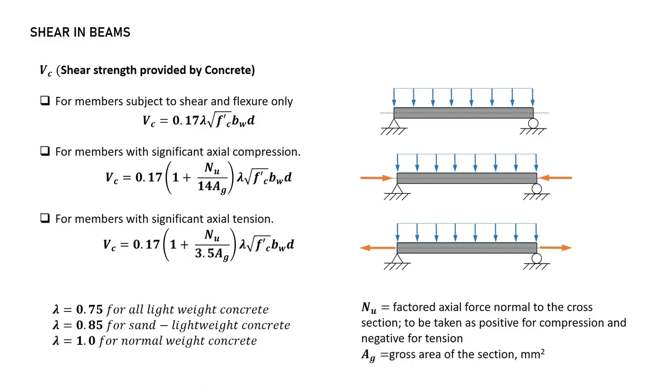NU is the factored axial force normal to the cross section to be taken as positive for compression and negative for tension. And AG is the gross area of the section. And next are the provision for the design of shear reinforcement.